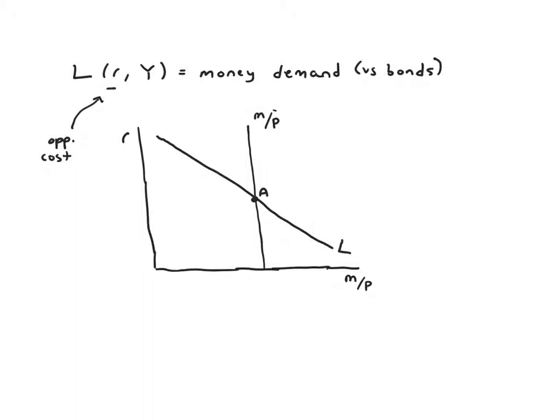So the issue becomes the more stuff you want to buy then the more money you're going to hold and presumably the higher your income is the more stuff you want to buy. So naturally we would think the higher your income goes the more purchases you make and the more purchases you make the more money you need. So this would be a positive relationship.